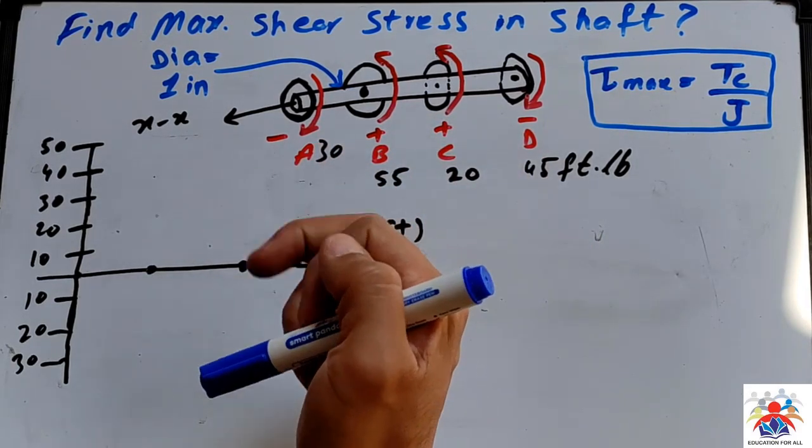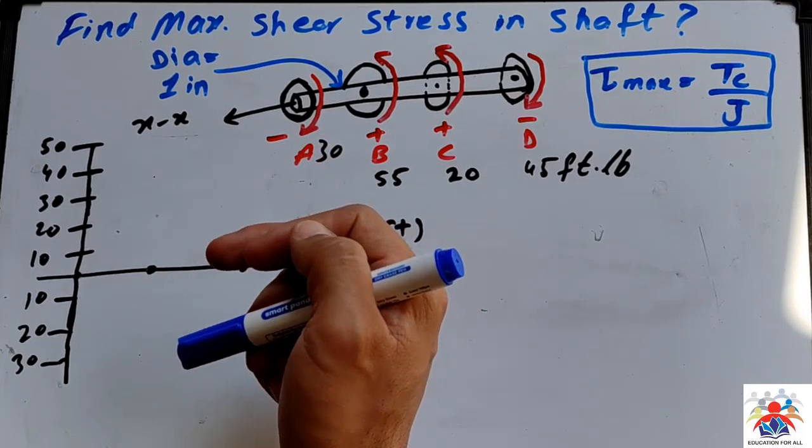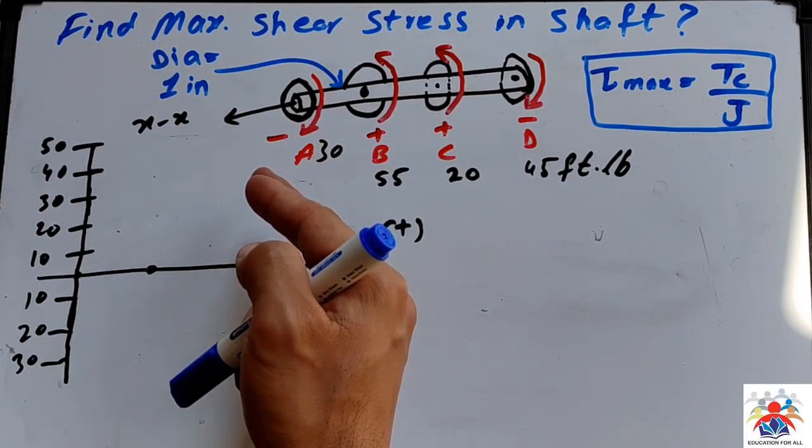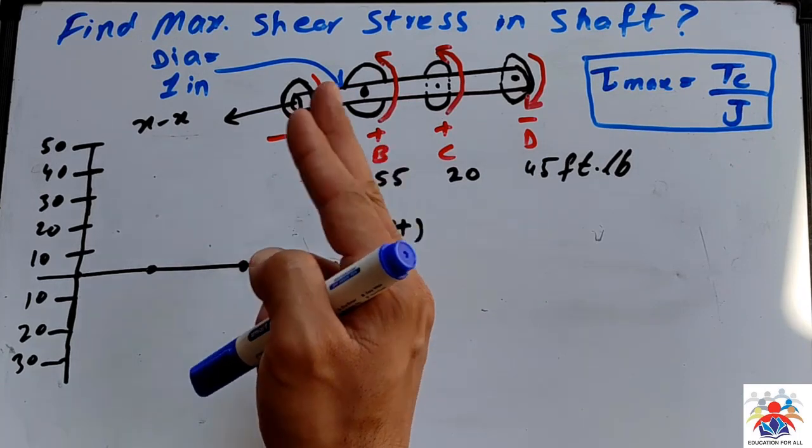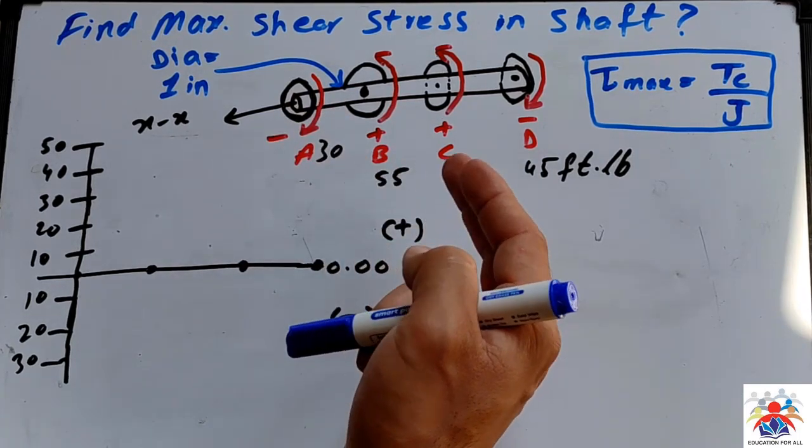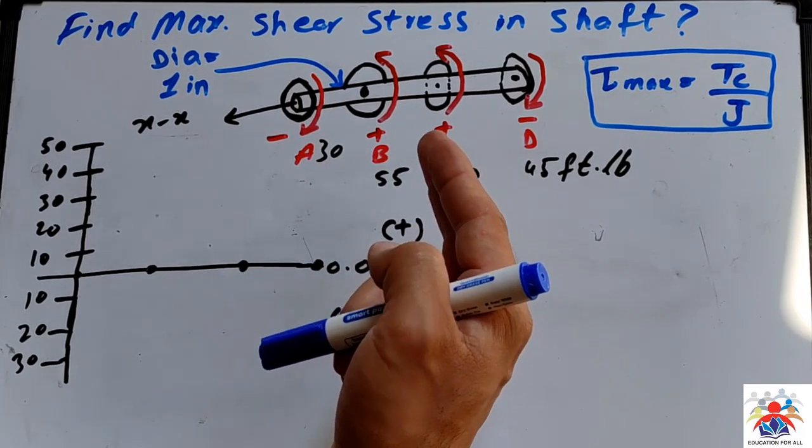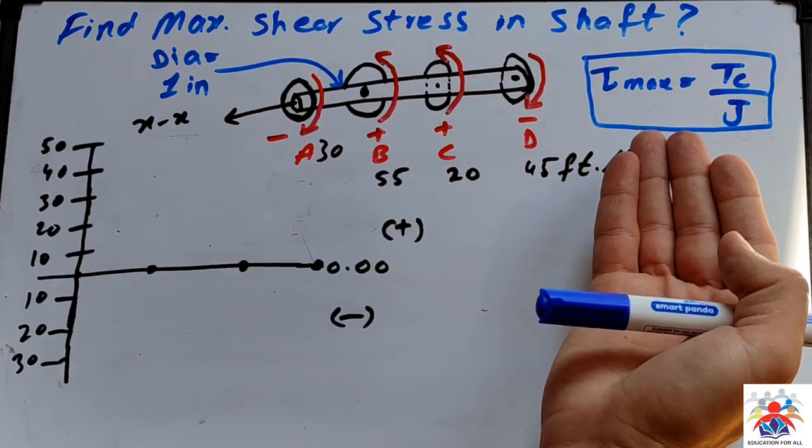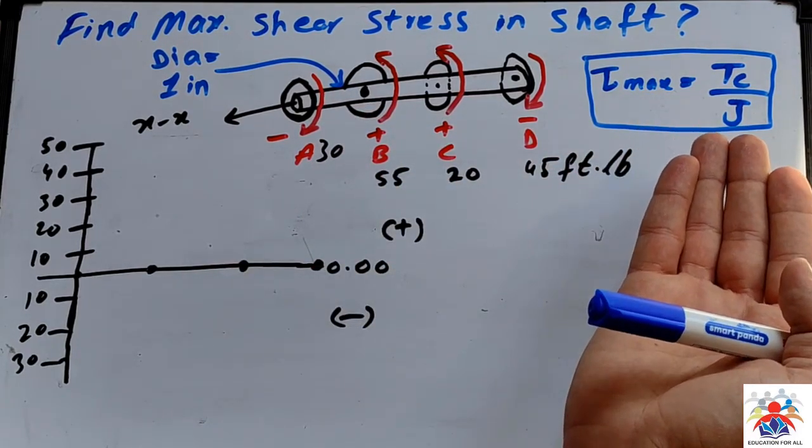A is clockwise, which is minus. B is anti-clockwise, which is plus. C is also anti-clockwise, which is also plus. So we have a formula to calculate maximum shear stress in a shaft.